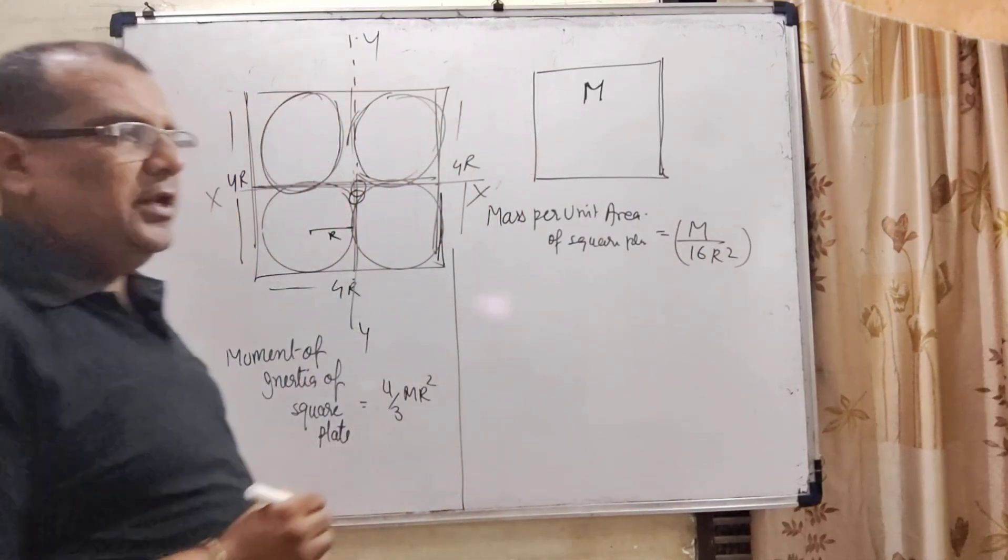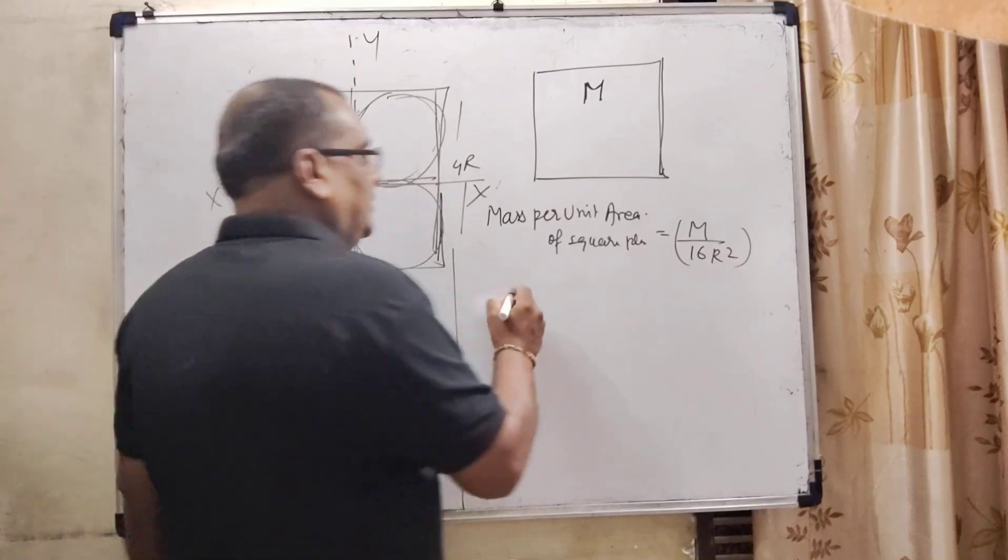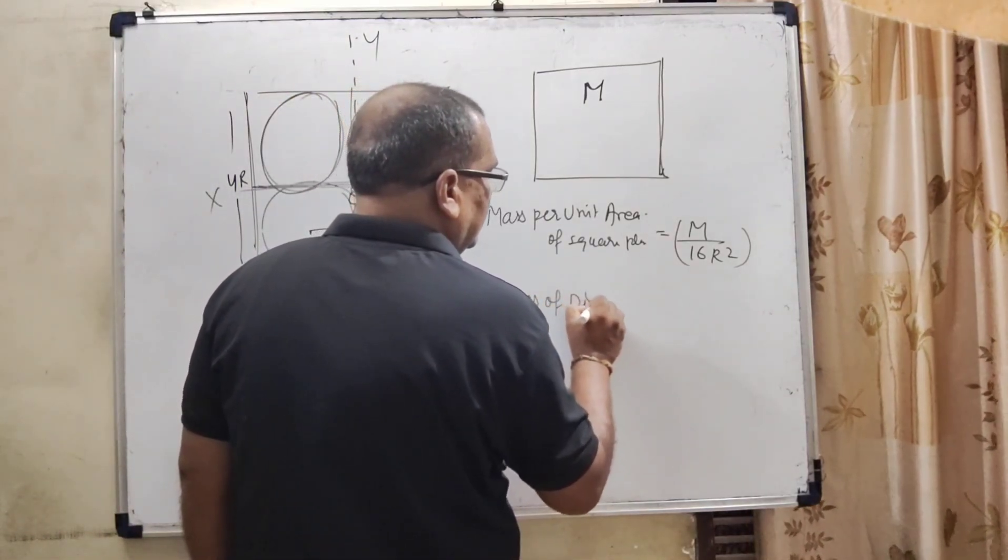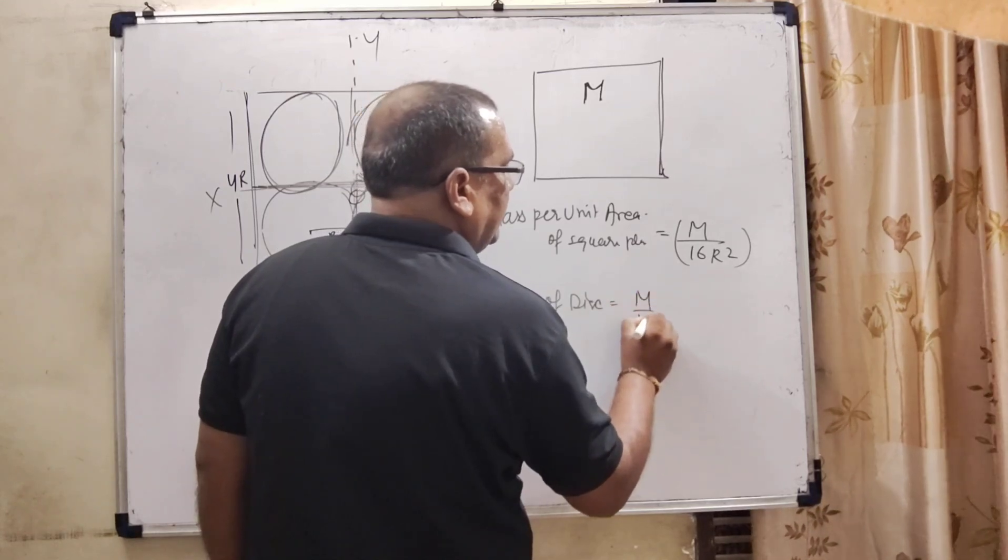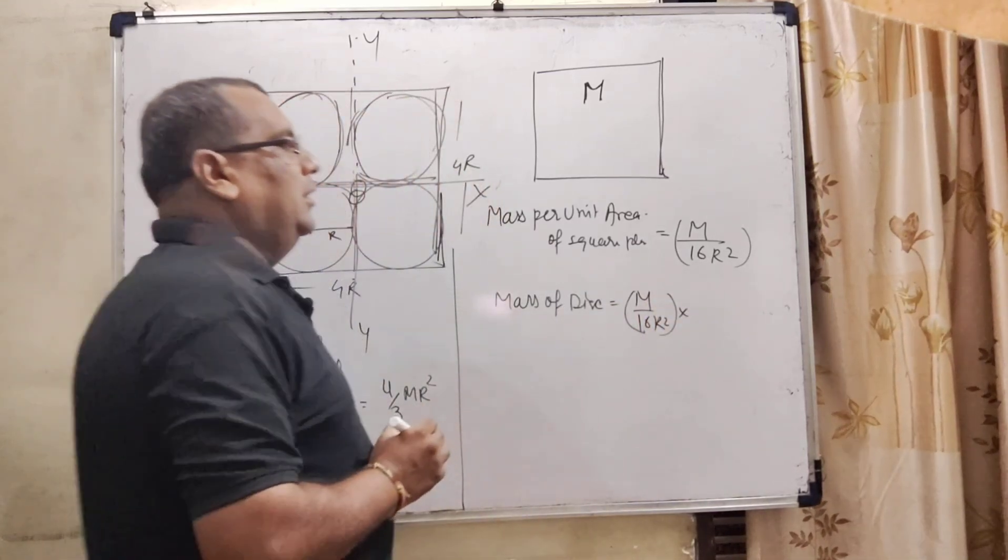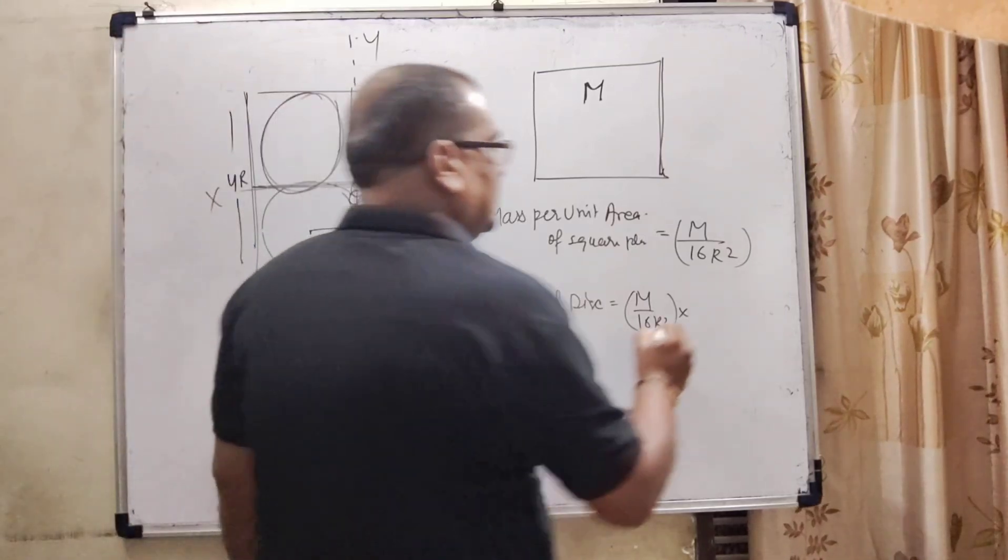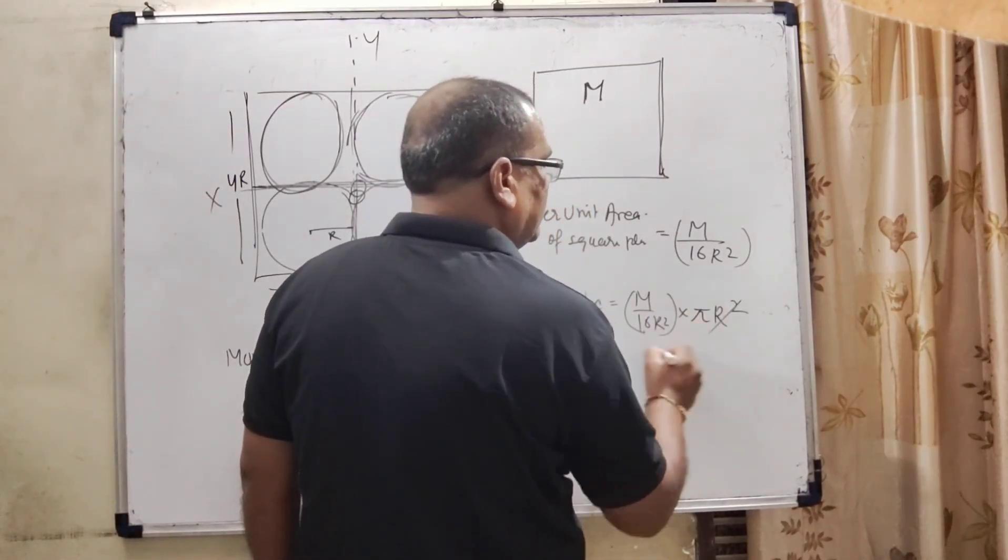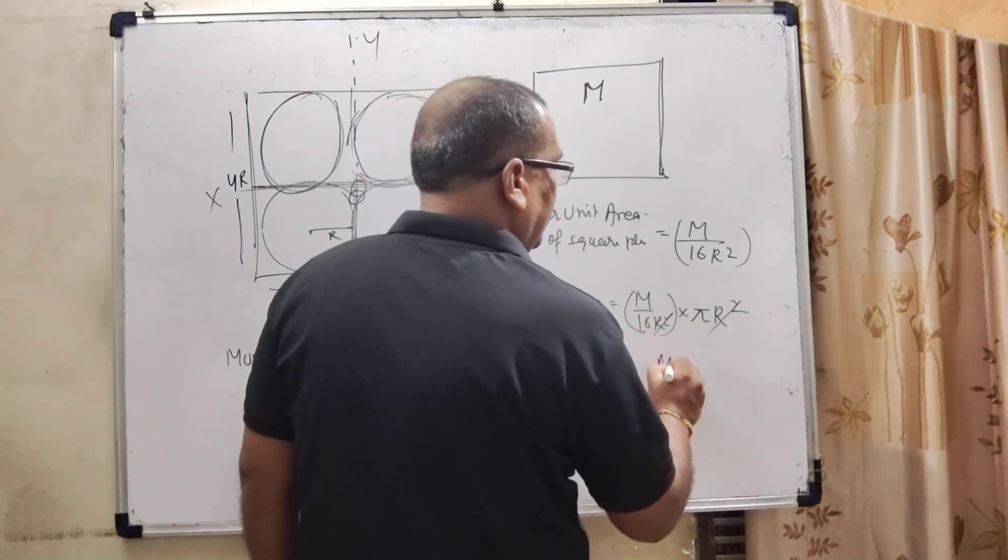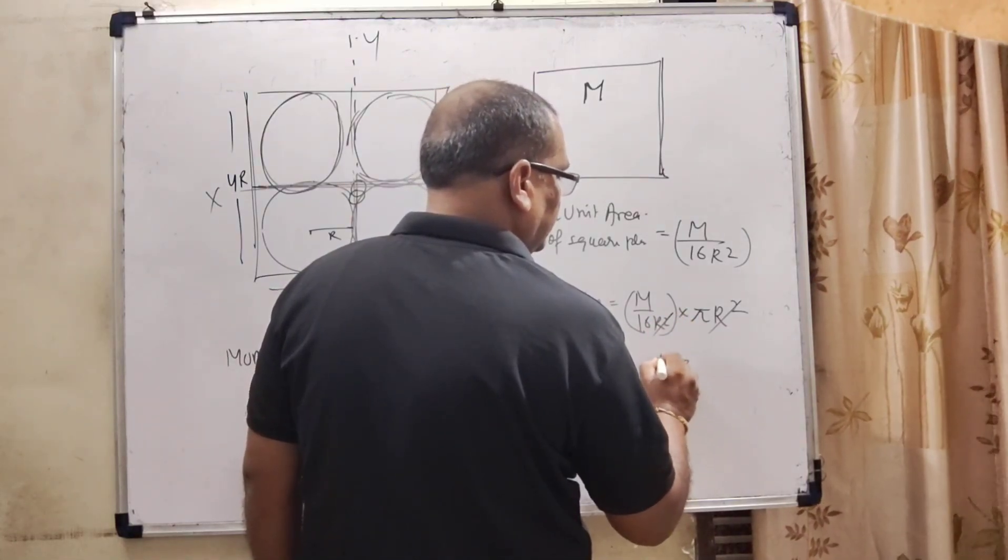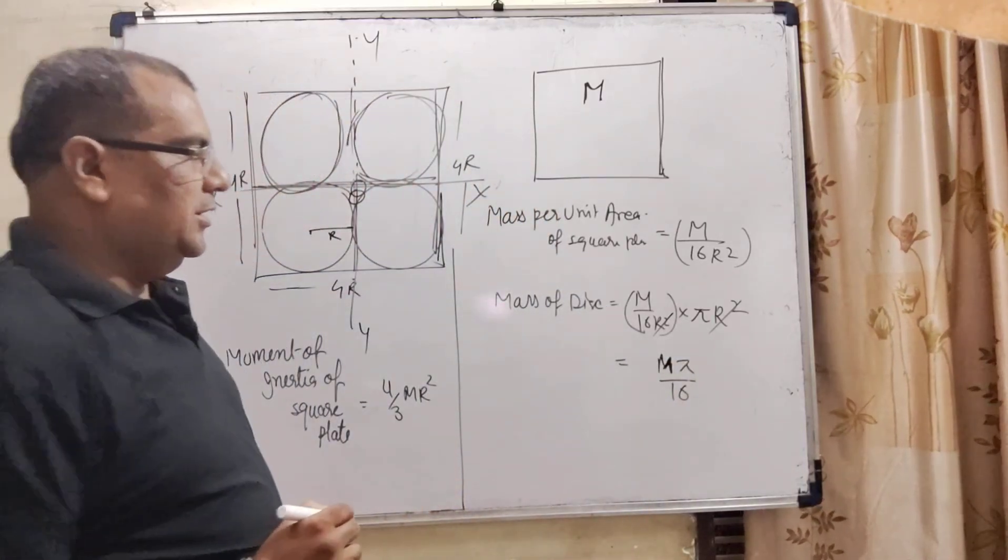This is mass per unit area. Mass of disc: mass per unit area into area of disc, that is pi R square. R square R square cancel out, giving M pi by 16. M pi by 16.